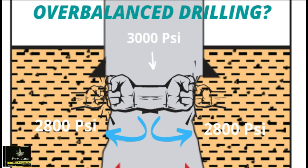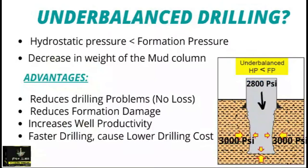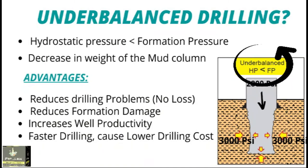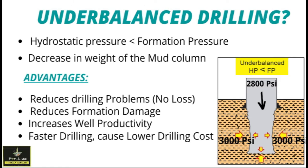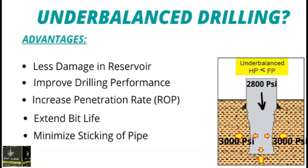Now for under-balance drilling: in under-balance drilling, the hydrostatic pressure is less than the formation pressure. As you see in the image, 2800 pressure is applied from the wellbore and 3000 pressure is already available in the reservoir. The pressure applied from the wellbore is minimum and the reservoir pressure is greater. This situation is known as under-balance drilling — our well is in an under-balance condition.